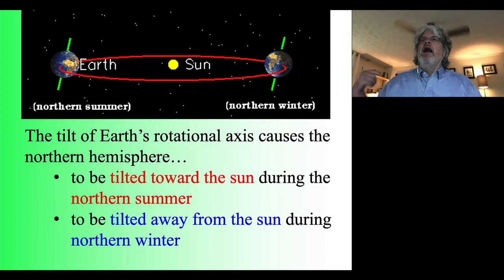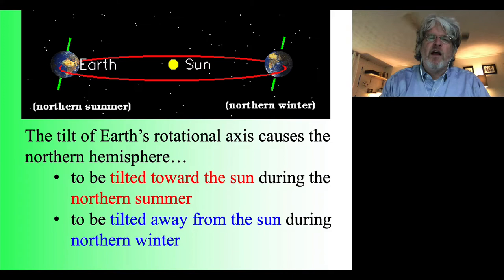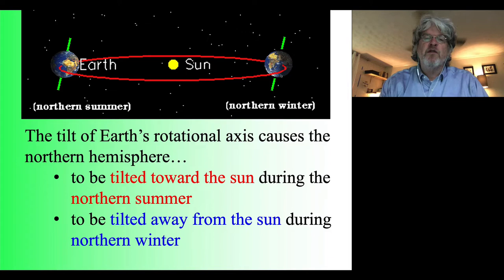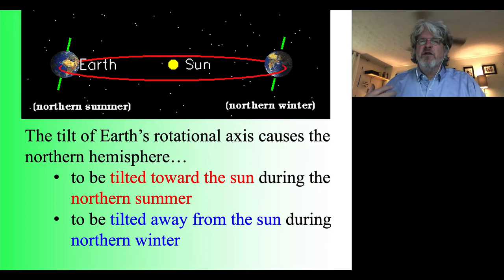This is what's going on with the seasons. In the northern winter, when we're tilted away from the sun, the southern hemisphere is tilted towards the sun — it's their summer. Six months later, the southern hemisphere is tilted away from the sun — it's their winter, which corresponds to our summer. There are a couple of different reasons why this affects temperatures in the northern and southern hemispheres.